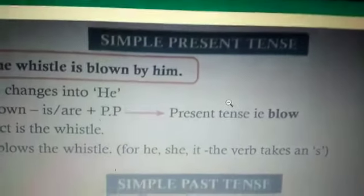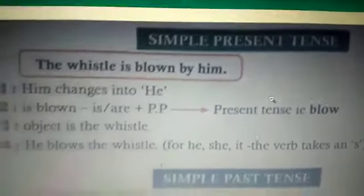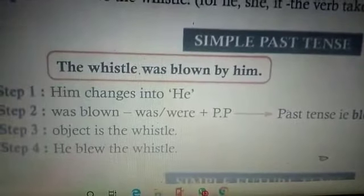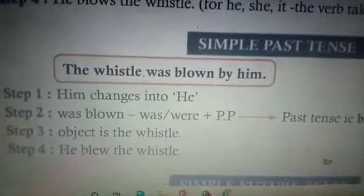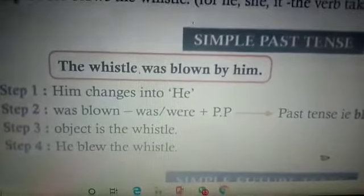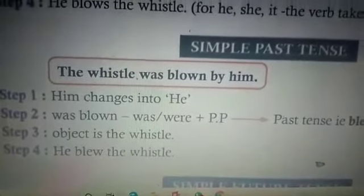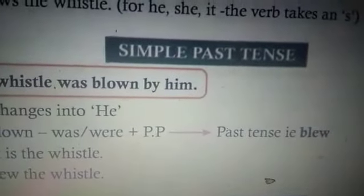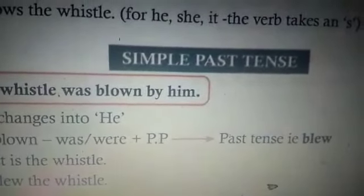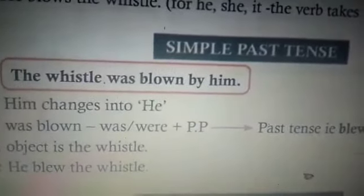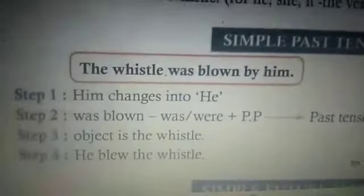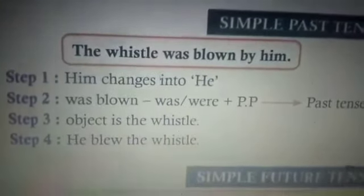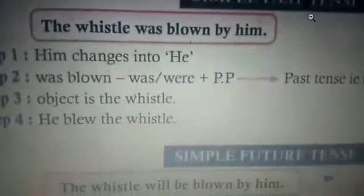Coming to simple past tense. 'The whistle was blown by him.' Step 1: 'him' changes to 'he.' Step 2: 'was blown' — passive 'was/were' plus verb 3 — active past tense uses verb 2: 'blew' (B-L-E-W). Step 3: the object is 'the whistle.' Step 4 completion: 'He blew the whistle.'